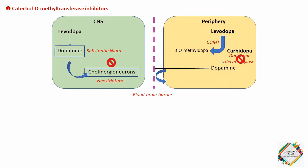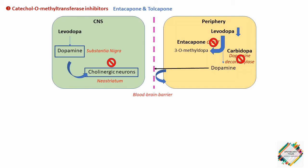Next, moving on to catechol-O-methyltransferase (COMT) inhibitors. Normally the methylation of levodopa by COMT to 3-O-methyldopa is a minor pathway for levodopa metabolism in the periphery. However, when peripheral dopamine decarboxylase activity is inhibited by carbidopa, a significant concentration of 3-O-methyldopa is formed that competes with levodopa for active transport into the CNS. Entacapone and tolcapone selectively and reversibly inhibit COMT, leading to decreased plasma concentrations of 3-O-methyldopa and increased central uptake of levodopa with greater brain dopamine concentration.